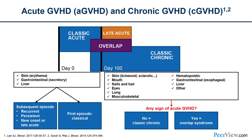Our understanding of graft-versus-host disease — the symptoms, the biology, and therefore the therapies — has really evolved over the last number of decades. We now appreciate that these are two distinct forms of complication. When thinking about acute graft-versus-host disease, the main organs involved are the skin, the GI tract — including both the lower and upper intestines — and the liver. A first episode in the earlier months after transplant would be considered classical acute graft-versus-host disease, though things don't always fit neatly into these categories.